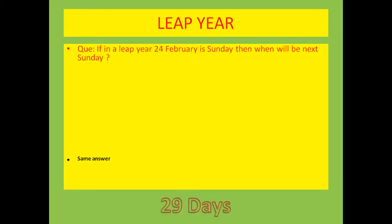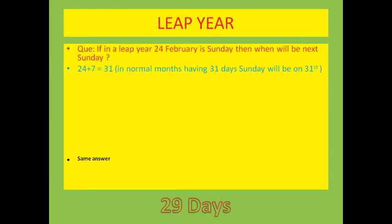Here is one more question. If in a leap year, 24th February is a Sunday, then when will the next Sunday be? Before solving this, we have to learn: to find the next Sunday or Monday, we add 7. So if the 24th is a Sunday, the next Sunday will be on the 31st. That is 24 plus 7 equals 31.